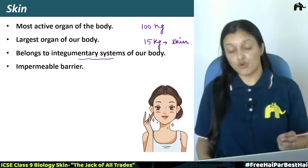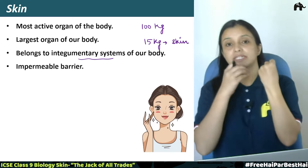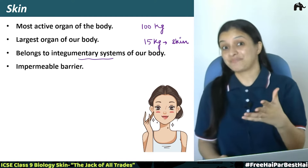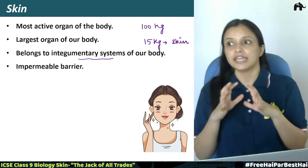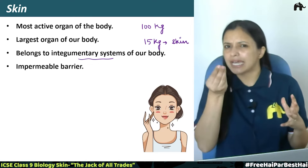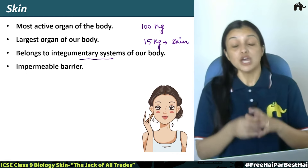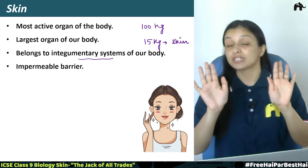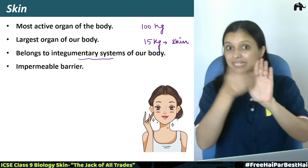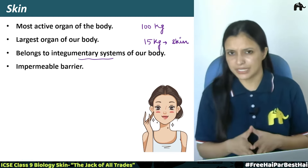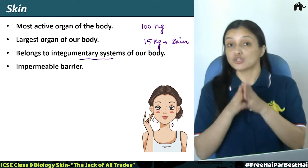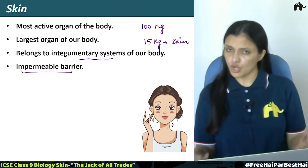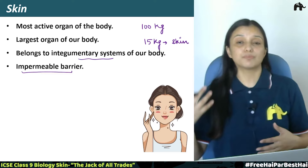The skin is an impermeable barrier. It means that water cannot pass through it — even if you dip your hand in water, your body will not absorb water from there. Microorganisms are almost everywhere around us, but our skin does not allow these microorganisms to penetrate. It protects our body from infection. So basically, the skin is an impermeable barrier, and many glands and structures originate from it. We will discuss all this in the functions of skin.